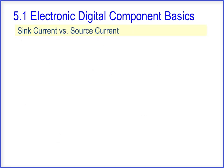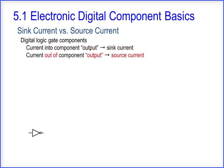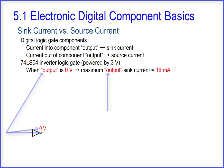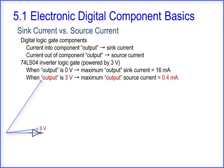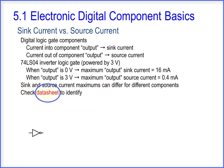For digital logic gate components, the current into the component output is a sink current, and the current out of the component output is a source current. For a 74LS04 inverter logic gate powered by 3 volts: when the output is 0 volts, the maximum output sink current is 16 milliamps; when the output is 3 volts, the maximum output source current is 0.4 milliamps. Sink and source current maximums can differ for different components — check the datasheet to identify sink and source current values.